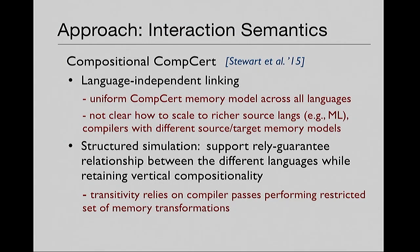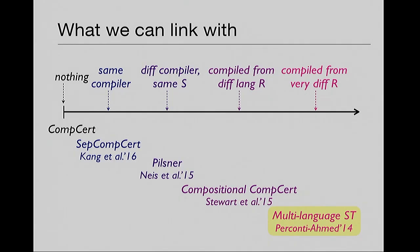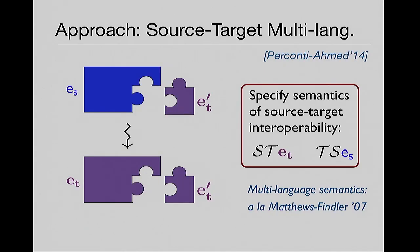So let's talk about the next piece of work, which does let you do compiler verification where the source and target might have very different memory models. This is our work. We're back to the same problem of how do we allow linking between source and target. We're not going to do language-independent linking. Instead, if you have a source and a target and you need to make them interoperate, we're going to define a multi-language semantics, which takes the source language and the target language, globs them together, and adds two constructs: two boundary forms.